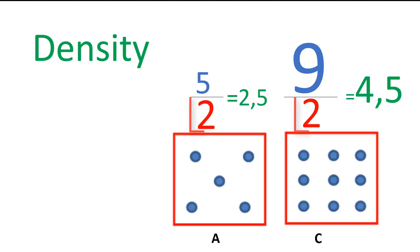So you can see how when the denominator is the same, the fraction with the larger numerator has a larger answer. It's also obvious that the dots are more squashed in C than in A. C has a greater density than A.